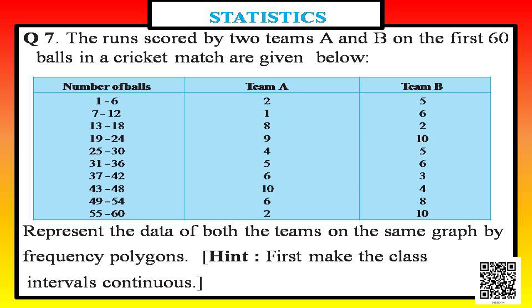Now let us do question number seven of exercise 14.3. The question is: the runs scored by two teams A and B on the first 60 balls in a cricket match are given below. The class intervals are 1 to 6, 7 to 12, 13 to 18, 19 to 24, 25 to 30, and so on till 55 to 60, with two columns giving the runs for team A and team B. We are asked to represent the data of both teams on the same graph by frequency polygons.